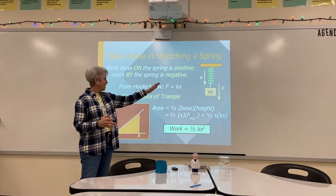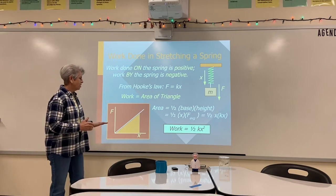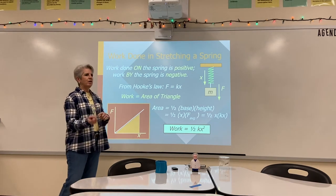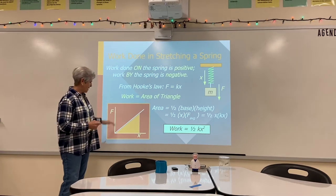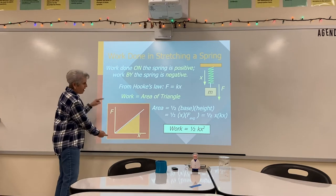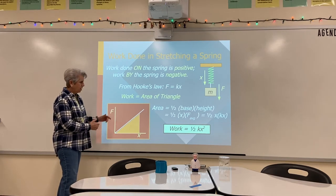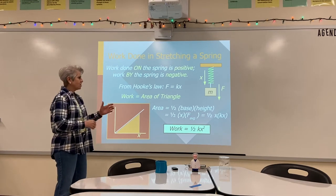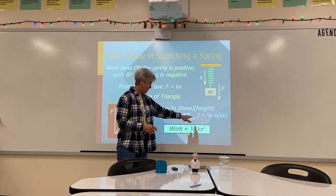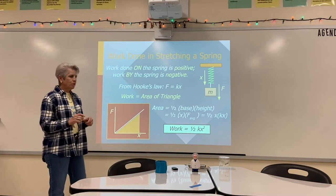From Hooke's law, force is K times X. If we look at a graph of force and stretch, this force changes as the object stretches, so we get a triangle instead of a rectangle. Work is still going to be area — it's just the area of a triangle, which is one half the base times the height. If I do this stretch with a starting force and an ending force, I add them and divide by two to get the average force. So work equals one half K times X squared, or one half X times the average force. Since F equals K times X, doing one half X times K times X gives us one half K X squared. This is how we find the energy of a spring.